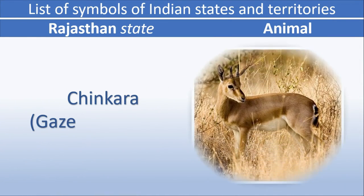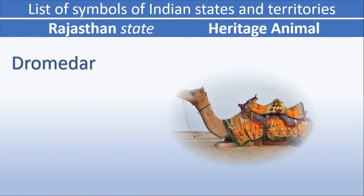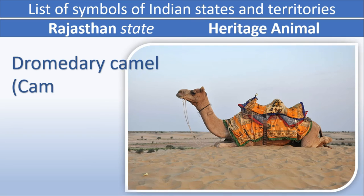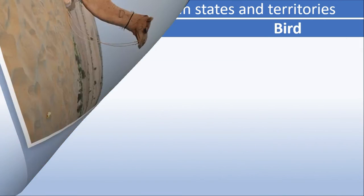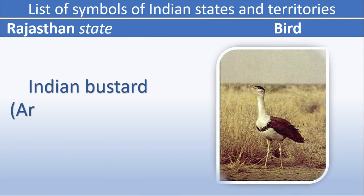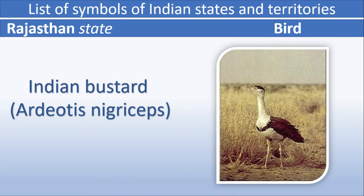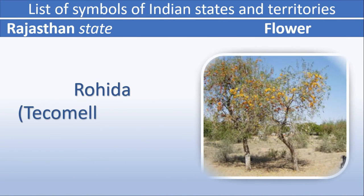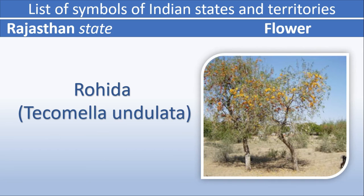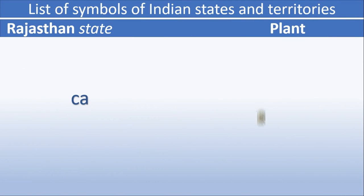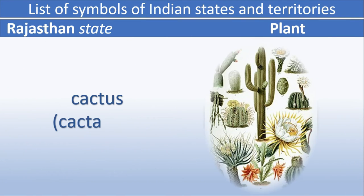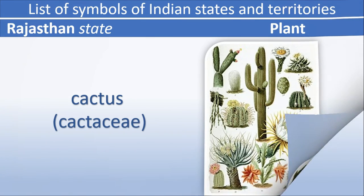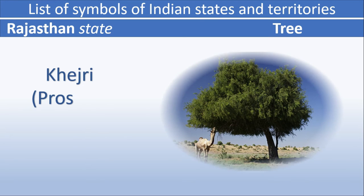Rajasthan animal: Chinkara. Rajasthan heritage animal: Dromedary Camel. Rajasthan bird: Indian Bustard. Rajasthan flower: Rohida. Rajasthan plant: Cactus. Rajasthan tree: Khejri.